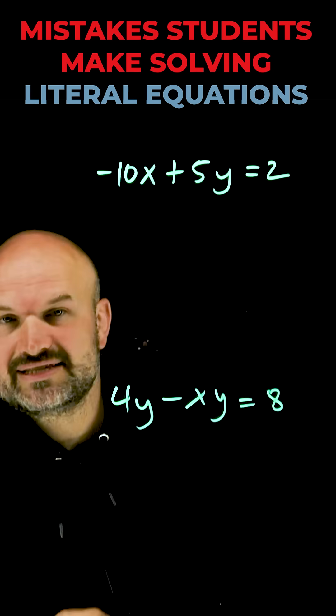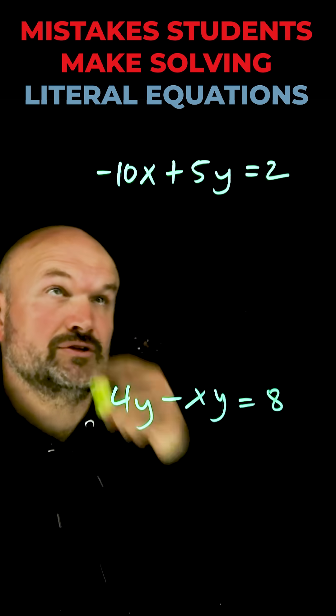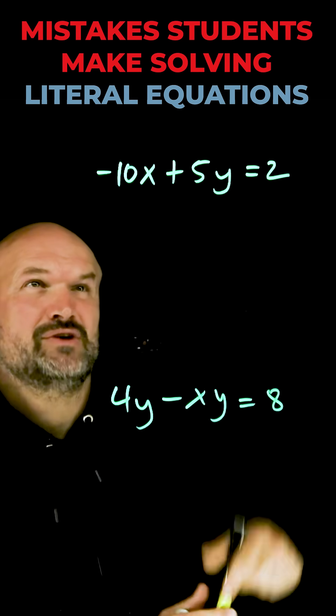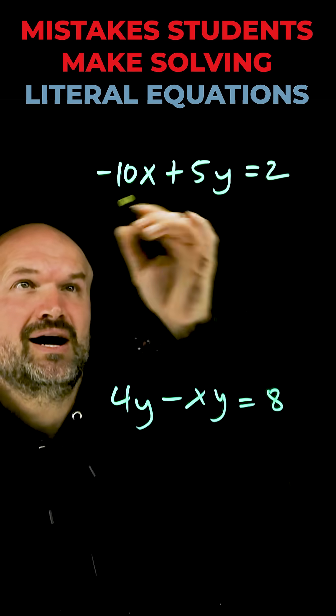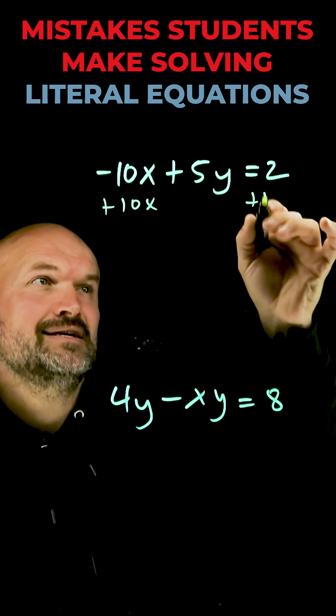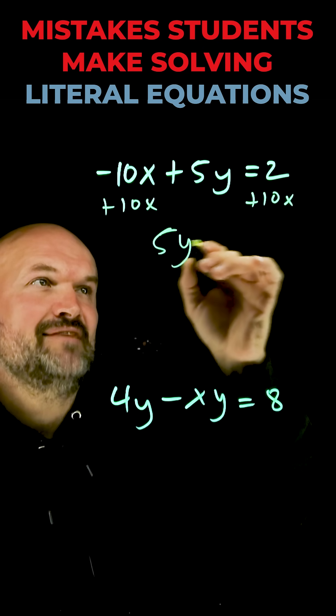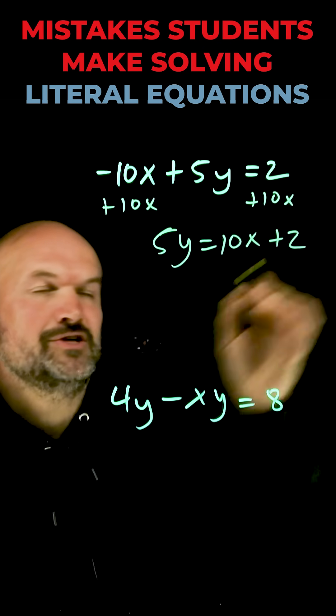Let's talk about two common mistakes that I see students make when solving literal equations. The first one seems pretty straightforward like I just need to solve for y. I'm going to add the 10x on both sides and I get 5y equals 10x plus 2.